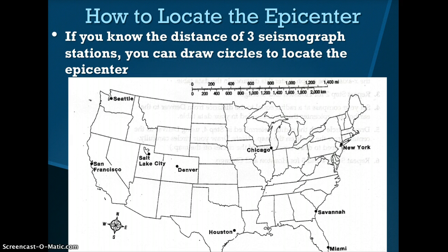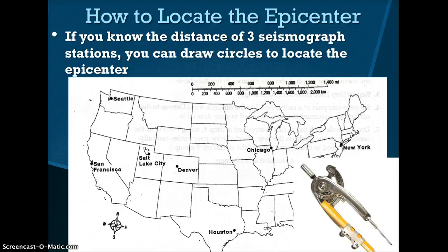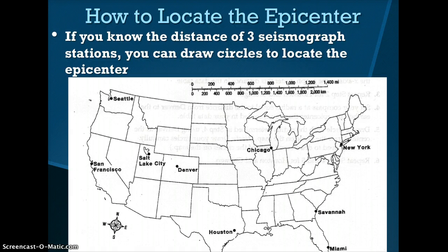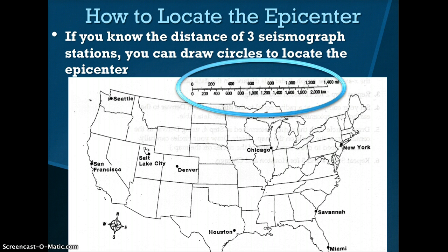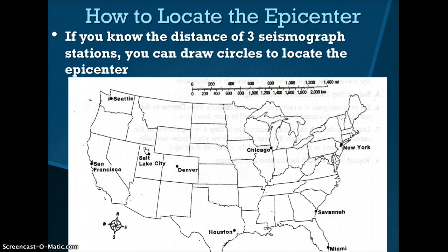If you know the distance of 3 seismograph stations from the epicenter, you can draw circles to locate the epicenter. Using the information from the graph, one of the stations was 5,200 kilometers away. You would take a compass, line it up to an equal distance of 5,200 kilometers on the scale, put the point on zero, and open the compass so that the pencil lands on 5,200 kilometers. You would then place the compass point on the seismograph station's location and draw a circle. The circle represents all of the possible locations of the epicenter.